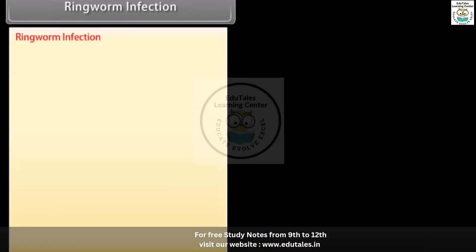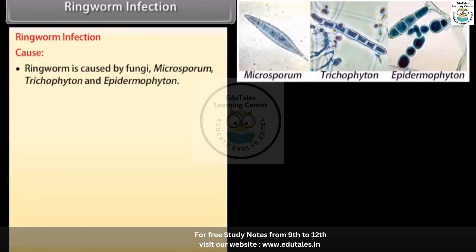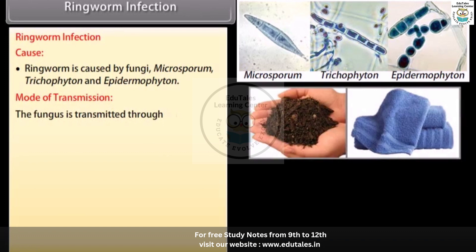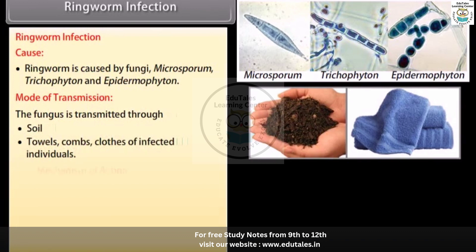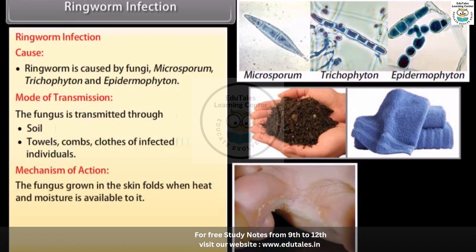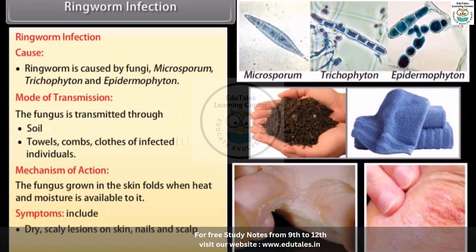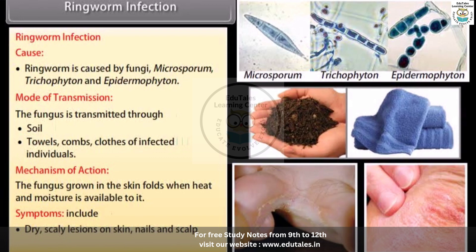Ringworm infection is caused by fungi — Microsporum, Trichophyton, and Epidermophyton. The fungus is transmitted through soil, towels, combs, and clothes of infected individuals. The fungus grows in the skin folds when heat and moisture are available. Symptoms include dry scaly lesions on skin, nails and scalp, and intense itching around the lesions.